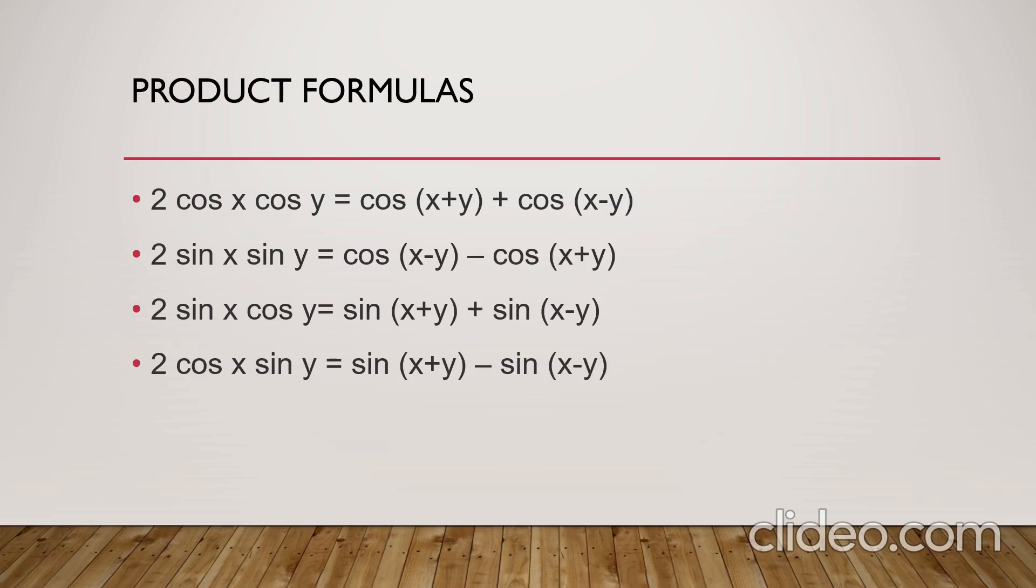These are the product formulas. First, 2 cos x cos y equals cos(x+y) plus cos(x-y). Second, 2 sin x sin y equals cos(x-y) minus cos(x+y). Third, 2 sin x cos y equals sin(x+y) plus sin(x-y). Fourth, 2 cos x sin y equals sin(x+y) minus sin(x-y). In class I will give you the trick to learn the formulas. Trigonometry is a game we can enjoy by using all the formulas. You will enjoy a lot if you learn all the formulas. But if you don't remember the formulas, we can do nothing in trigonometry. So first, what do we need to do? We need to remember all the formulas. Then we will enjoy our trigonometry chapter.